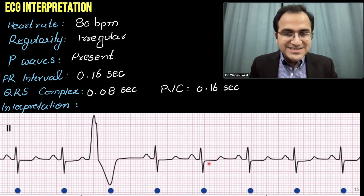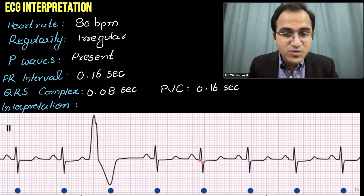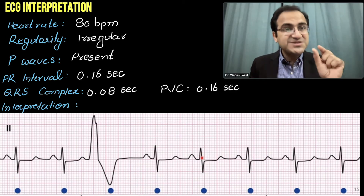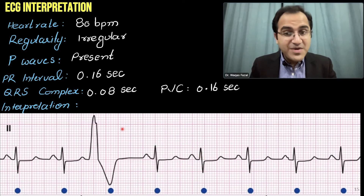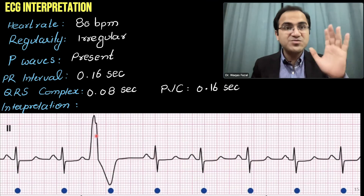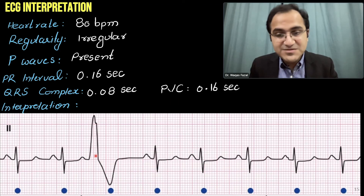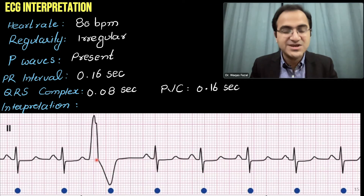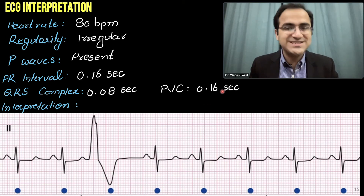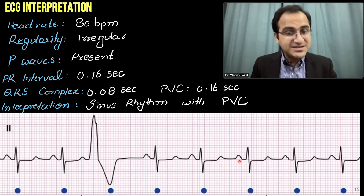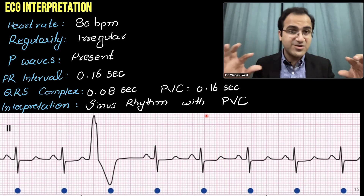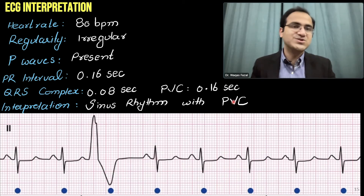There is also an abnormal QRS complex — a PVC — measuring almost four small boxes wide: 4 × 0.04 = 0.16 seconds, confirming a wide QRS complex. The interpretation of this ECG is therefore sinus rhythm with a premature ventricular contraction. The interpretation is not just 'premature ventricular contraction' — it must be stated as 'sinus rhythm with a premature ventricular contraction.'